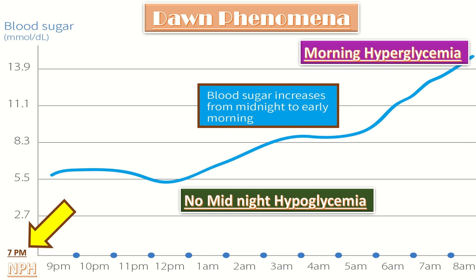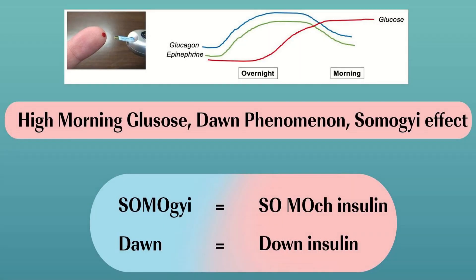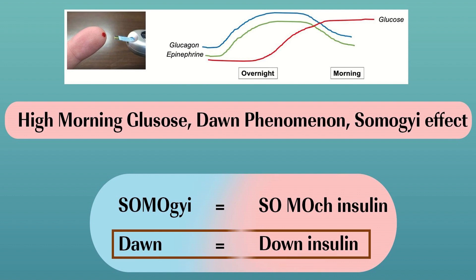The treatment for dawn phenomena is to increase the evening dose of NPH. Remember, in Somogyi effect we decrease the insulin dose, and here we are increasing it. The trick to remember: dawn phenomena is due to down-dosing of insulin, so the treatment is increasing the insulin dose — specifically, the evening insulin dose needs to be increased.